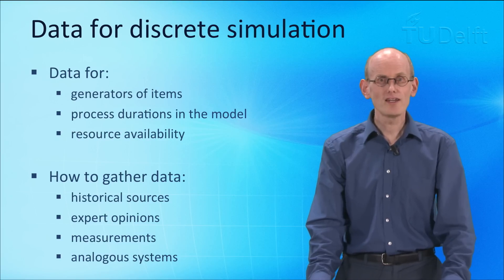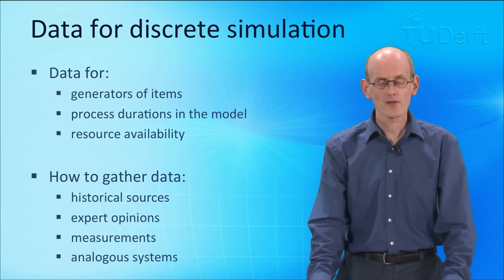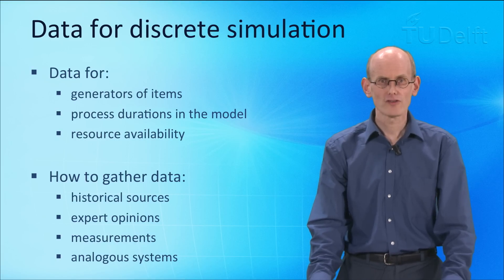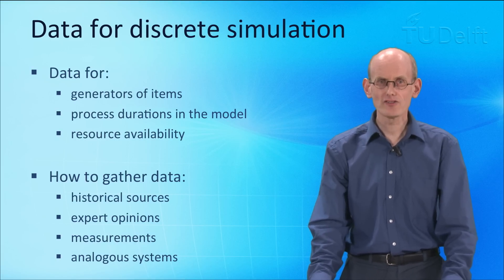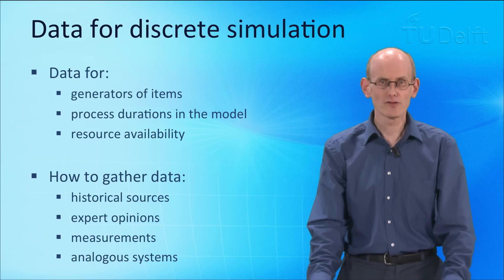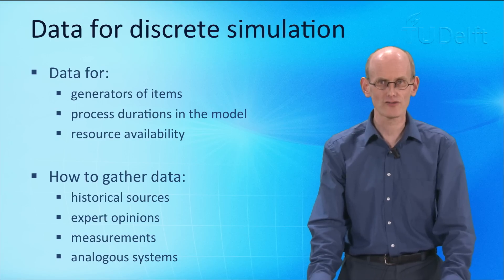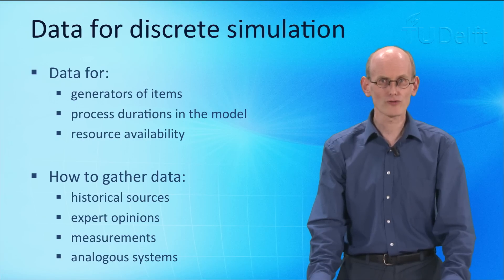What kind of data do we need to fill these kinds of models? Especially generators and sinks at the sources and ends of the model are very important. It means that we have to know when entities enter the model and when entities leave the model. We also have to know how long processes take and when resources are available. We can gather this data in many different ways, for instance with expert opinions, measurements, or historical sources like databases.